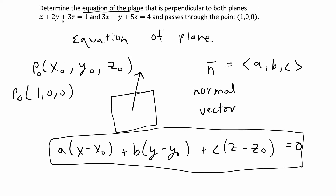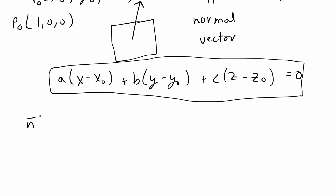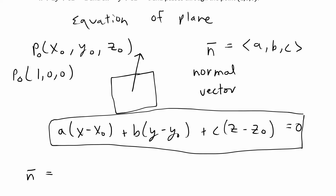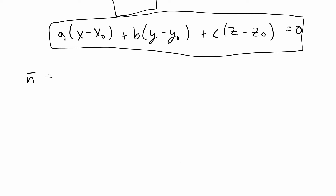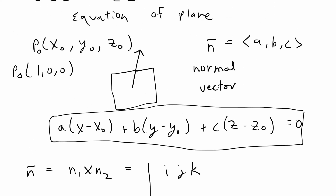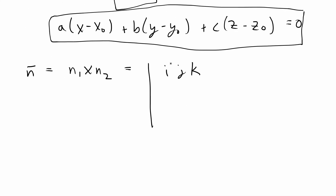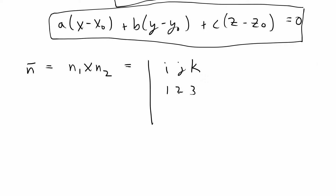To find the normal vector we're just going to find a vector that is perpendicular to these two planes. So to find the normal vector n, I'm going to take the cross product of the coordinates of these two planes — the cross product will give me a perpendicular vector. The coordinates for the first planar equation are (1, 2, 3) and the coordinates for the second planar equation are (3, -1, 5). So I'm going to write that as: the normal vector equals the cross product of n1 by n2, which equals the determinant of a 3×3 matrix. The first row is i, j, k; the second row is 1, 2, 3; and the third row is 3, -1, 5. Then I'm going to find the determinant of this 3×3 matrix to give me the coordinates for the normal vector.